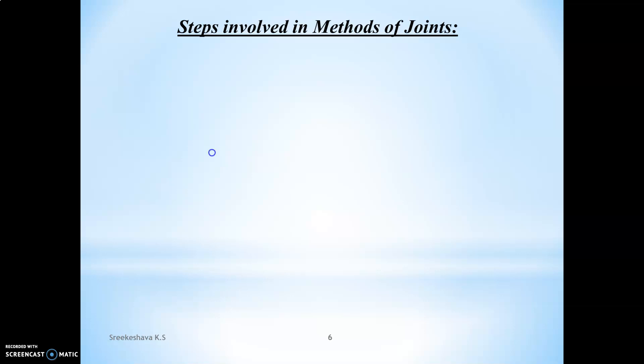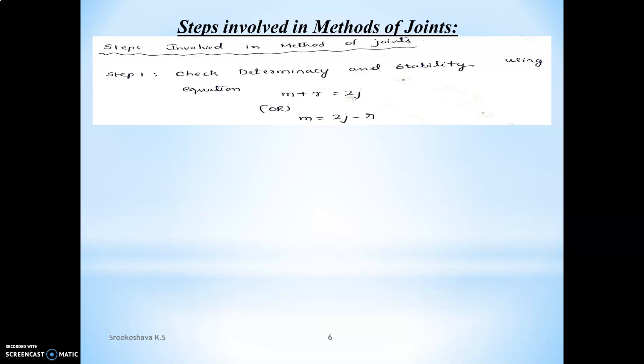Truss analysis can be done by two methods: method of joints and method of sections. In the method of joints, step one is to check whether the given truss is stable — that is, whether it is a perfect truss — using the equation m equals 2j minus r. This first step is common to both methods. Step two is to determine the external support reactions using equations of equilibrium: sigma V = 0, sigma H = 0, and sigma M = 0. These first two steps are the same in both methods.